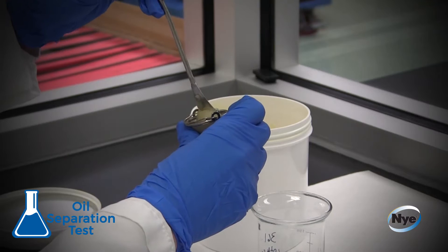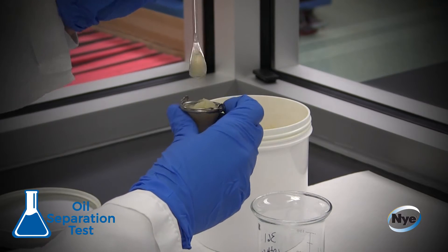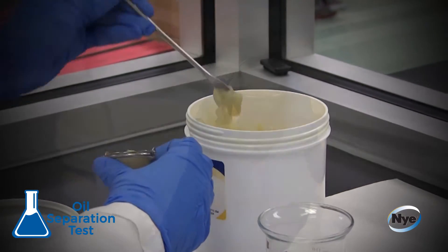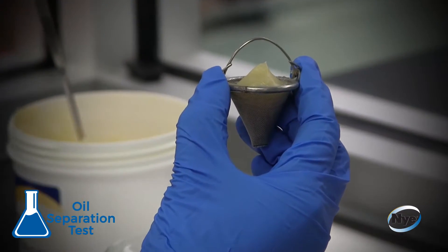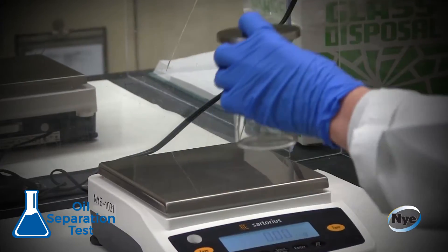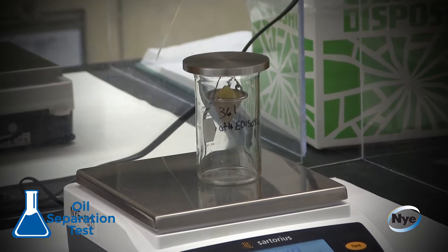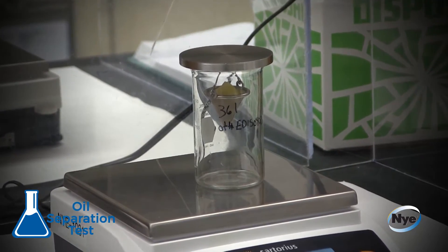The cone screen is then filled with 10 grams of grease. Both the filled cone and the empty oil separation apparatus are weighed to ensure the proper amount of grease was put in the cone. The cone is placed on the lid of the oil separation apparatus and then reweighed.